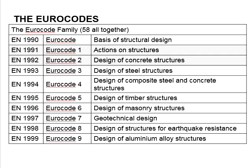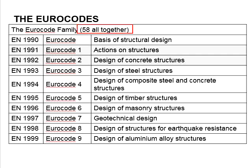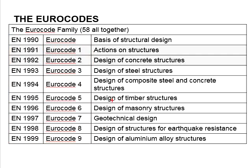For the design of reinforced concrete structures, Eurocode is referred quite extensively. For that, we will need to introduce you to the Eurocode family. In total, there are about 58 codes which can be categorized into 10 groups, from Eurocode 0 to Eurocode 9.